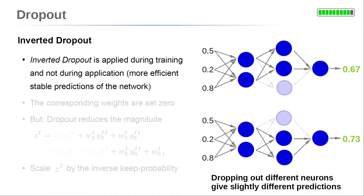Dropout is usually applied during training only and not when the trained neural network is applied to new data to estimate an unknown target value. This is because randomly dropping out neurons while applying the neural network to data gives unstable predictions. The neural network output varies slightly depending on the neurons dropped. We could do multiple forward passes with different neurons randomly dropped and average the output, but this process is very computationally intensive. Therefore, it is better to use dropout during training only.